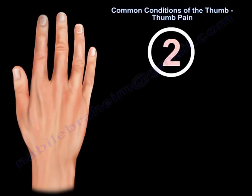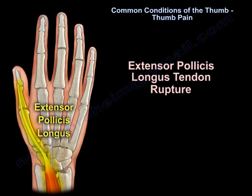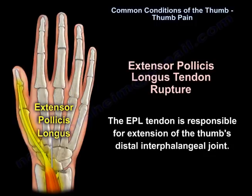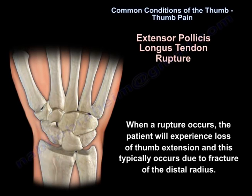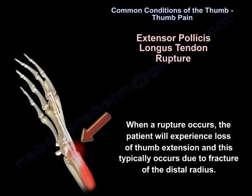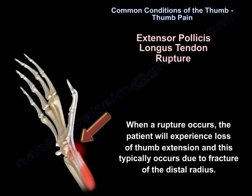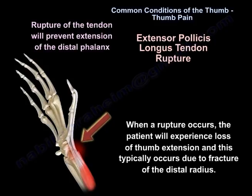Another condition is extensor pollicis longus tendon rupture. The extensor pollicis longus tendon is responsible for extension of the thumb distal interphalangeal joint. When the rupture occurs, the patient will experience loss of thumb extension, and this typically occurs due to fracture of the distal radius. Rupture of this tendon will prevent extension of the distal phalanx.